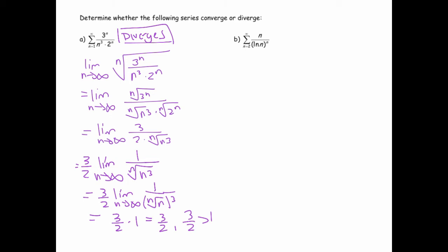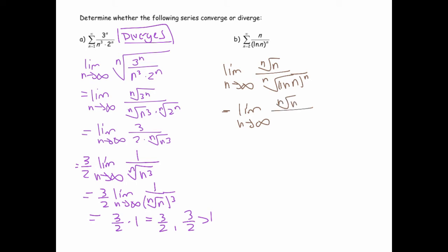The nth root test works just like the ratio test. Let's do this next example. We take the limit as n goes to infinity of the nth root of n divided by the natural log of n. The numerator goes to 1 as n goes to infinity, and the denominator goes to infinity, so this goes to zero. Since zero is less than 1, the series converges.